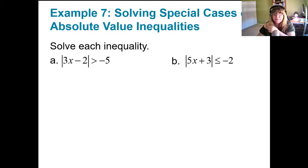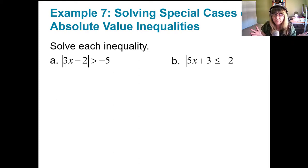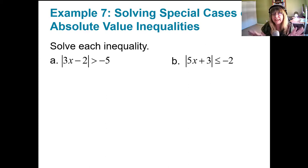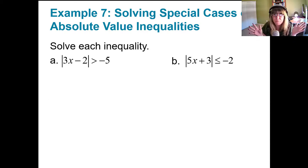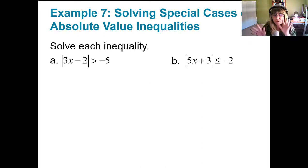The solution set is x such that x is less than or equal to 2 or x is greater than or equal to 6. Since 2 and 6 are included, we use brackets. Now, every time we learn something new, there are special cases to consider — and absolute values have them too: no x value makes it true, or every x value makes it true.